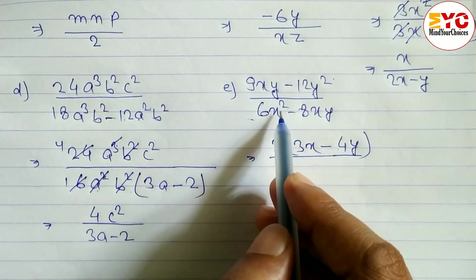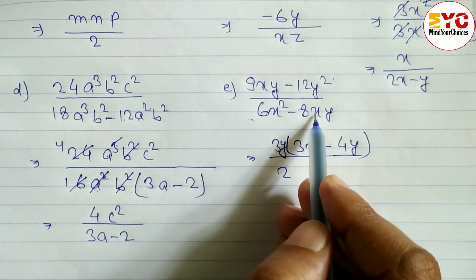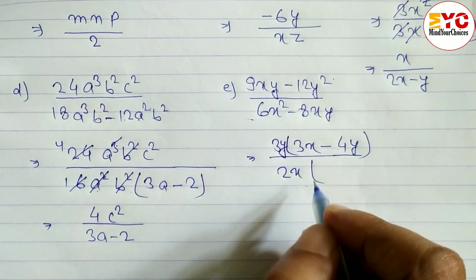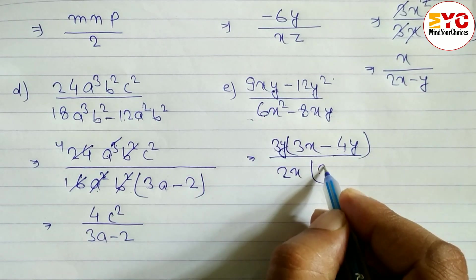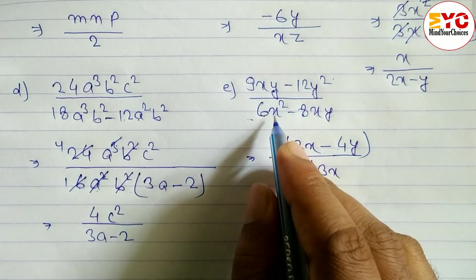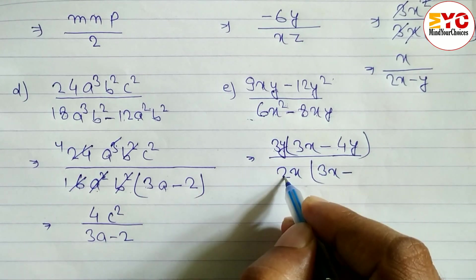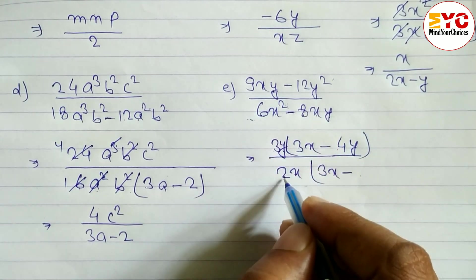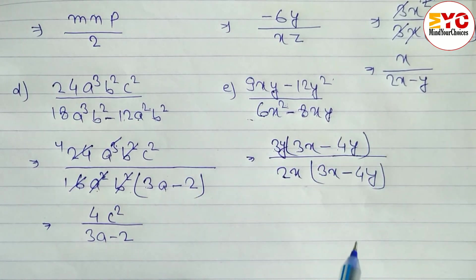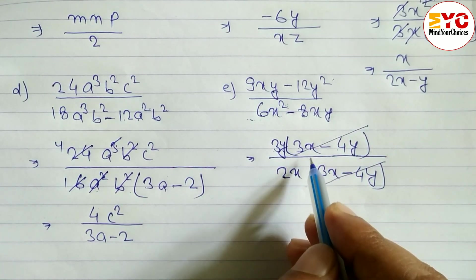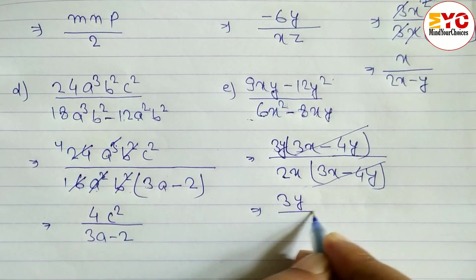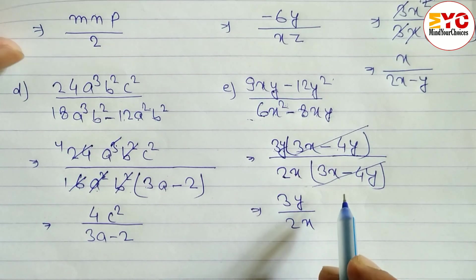For the denominator of 6x² - 8xy: GCF of 6 and 8 is 2, and the common variable is x. So the denominator becomes 2x(3x - 4y). Now (3x - 4y) cancels from numerator and denominator, leaving the final answer 3y over 2x.